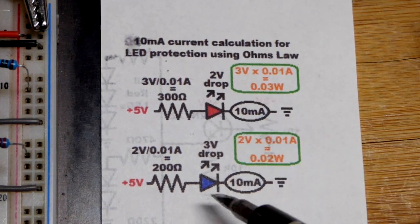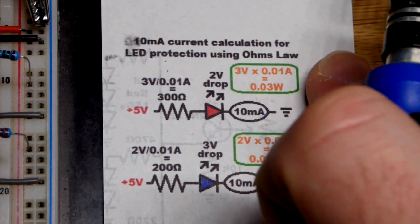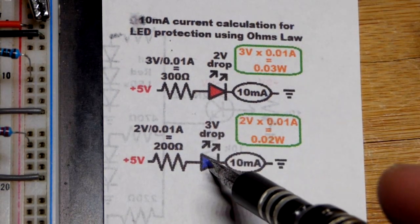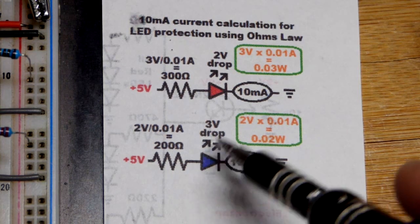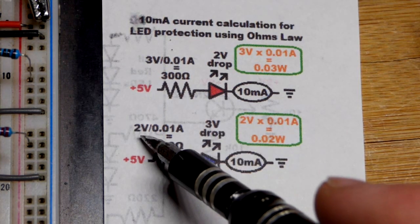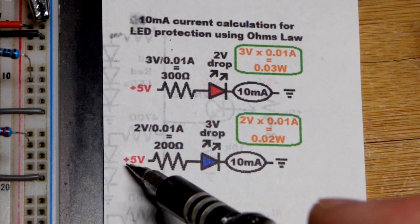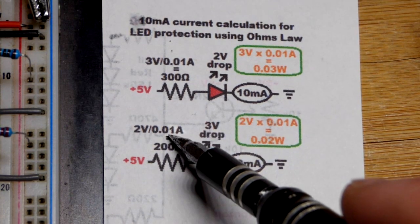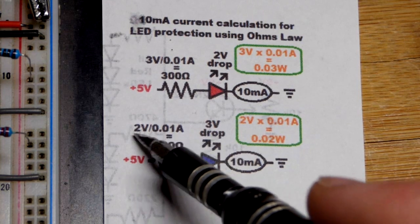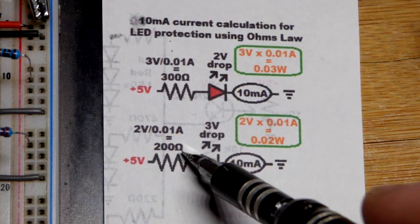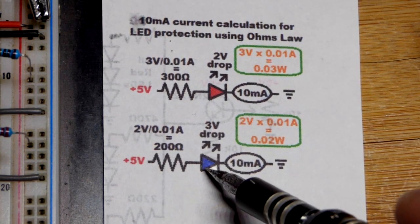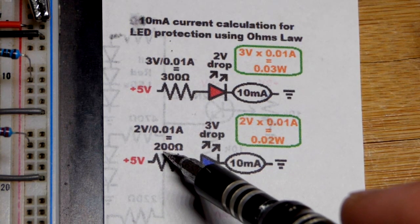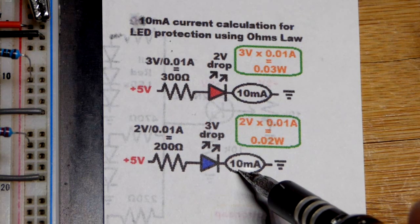The blue LED drops more voltage, about 3 volts, even though it looks brighter. That gives us 2 volts across the resistor. 2 divided by 0.01 amps gives us 200 ohms. I don't have a 200 ohm resistor, so I'm going to use 220 ohms, which will be a little bit shy of 10 milliamps.